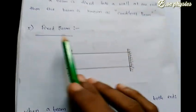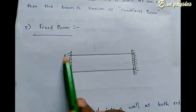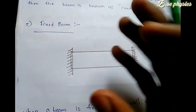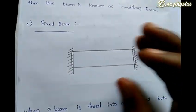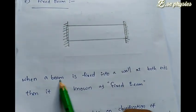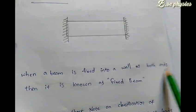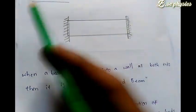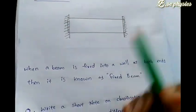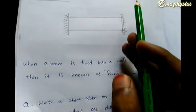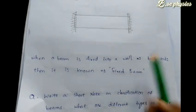The fifth one is the fixed beam. When a beam is fixed into a wall at both ends, then it is known as a fixed beam. Both sides are fixed to the wall. This is the fixed beam, and this is an important question for the exam.